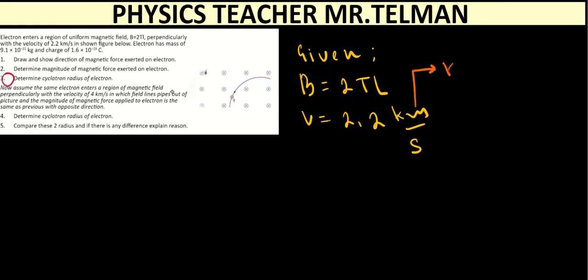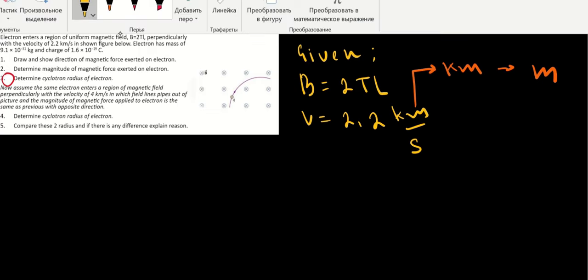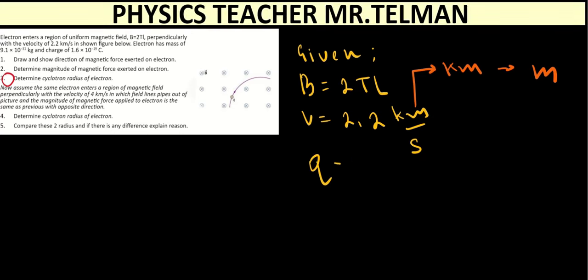It is meter. Kilometer needs to be written in meters. Then what we have? The value of the charge. Q equal to 1.6 multiplied by 10 to the power of minus 19 coulomb. And what do we need to find here? We need to find here the magnitude of the force.